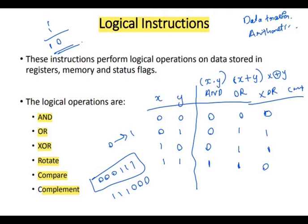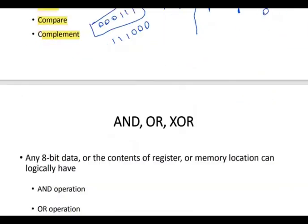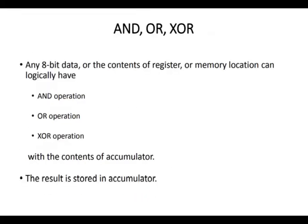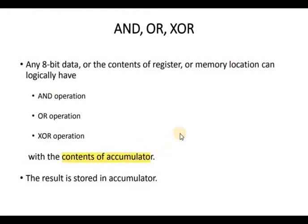How can these be implemented in 8085 architecture? Any 8-bit data or the contents of a register or memory location can logically have an AND operation, OR operation, or XOR operation performed with the contents of the accumulator. This is an important point to remember.